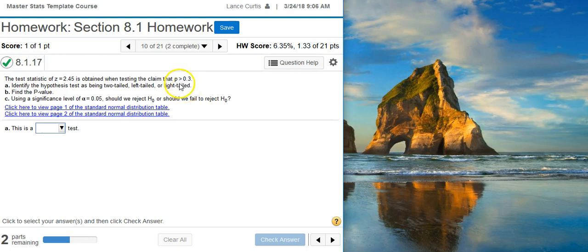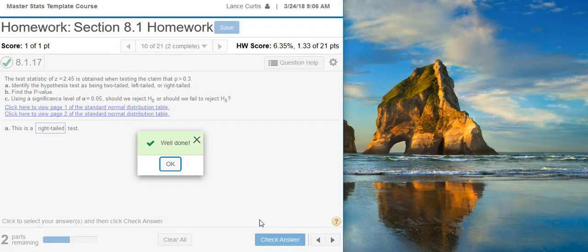If you look at the inequality sign, the greater than sign, it's like an arrow pointing to the right. That indicates that this is a right-tailed test. So I'm going to put that here in my answer field. Well done!